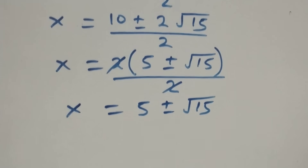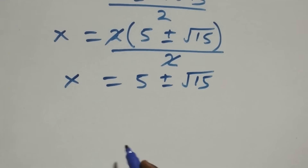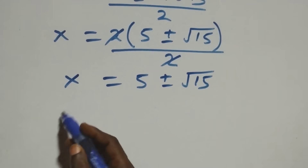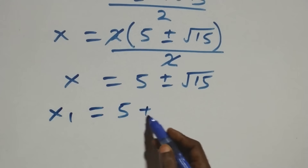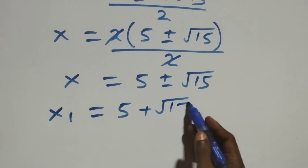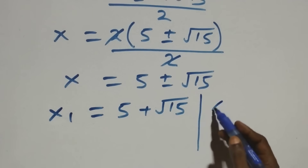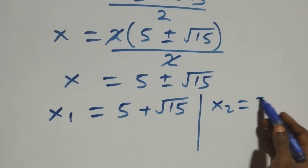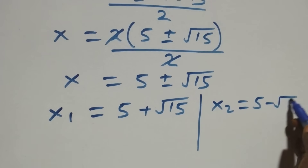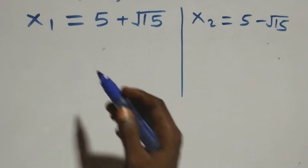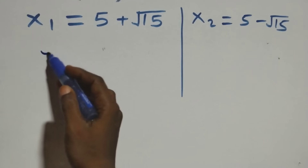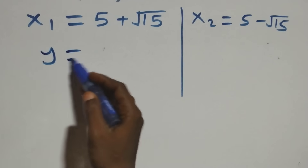We have two possible values of x: x₁ equals 5 plus √15, or x₂ equals 5 minus √15. To get the corresponding values of y, we use equation three, which is y equals to ten minus x.